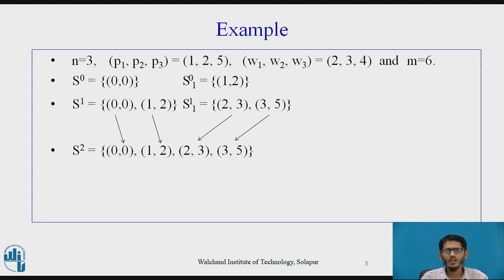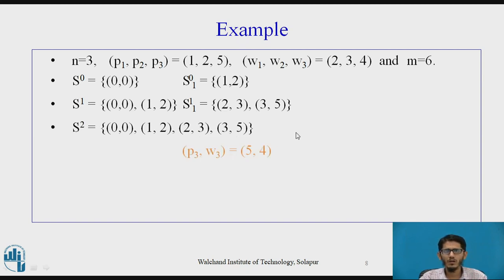Our next step is to find out s21 but for s21, we need p3, w3. So, p3, w3 is now (5, 4). So, this (5, 4) is now added to every tuple of s2 and hence we get tuples in s21. So, (5, 4) when added to (0, 0) gives (5, 4). Then (5, 4) added to (1, 2) gives (6, 6). Then (5, 4) added to (2, 3) gives (7, 7). And when (5, 4) added to (3, 5) gives (8, 9). In this way, we get s21.